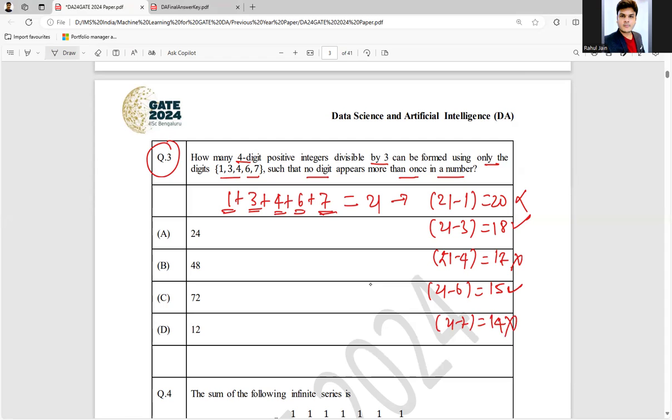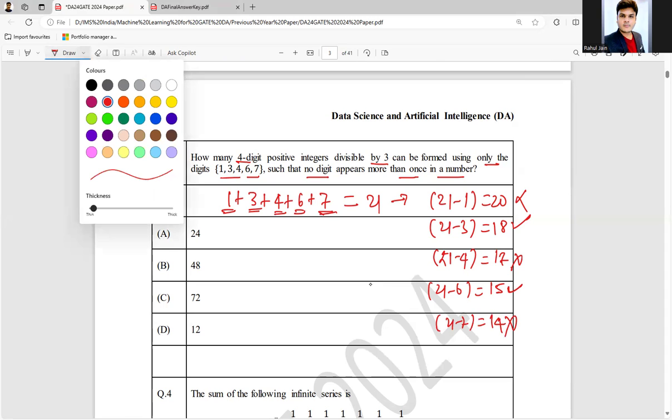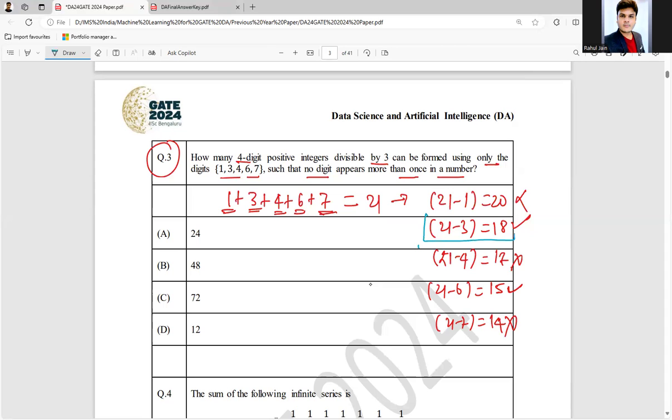So as of now you can see that here only two possibilities are there which we need to follow. One is this possibility where it is divisible by 3 and here it is one possibility where it is divisible by 3. So we can either remove 3 or 6. So I need to make a set like that.